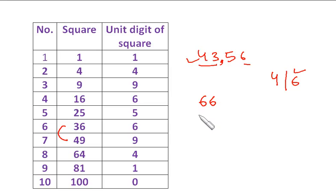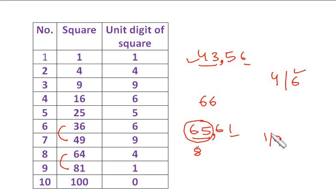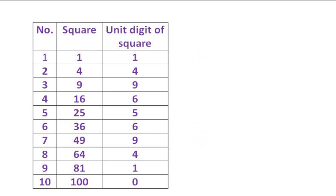Take 6561. Make the pairs: 61 and 65. Since 65 lies between squares of 8 (=64) and 9 (=81), the tens digit is 8. For the unit digit, the choices are 1 or 9. Multiply 8 by its next number: 8×9=72. Since 65 is less than 72, choose the smaller number: 1. So the square root of 6561 is 81.